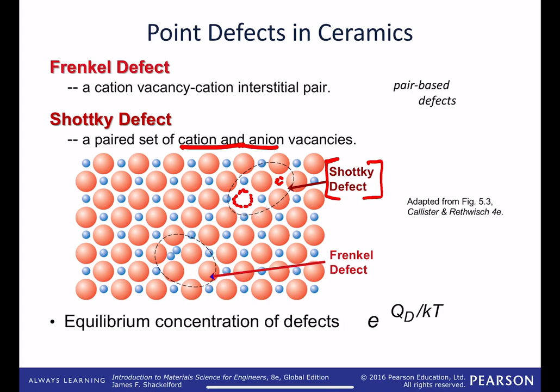A Frenkel defect can also occur. A Frenkel defect is where there is a cation vacancy and a cation interstitial pair. So we put two cations in the same cation spot, and we have nearby a cation vacancy here. And if those two are kind of paired, we have a Frenkel defect.